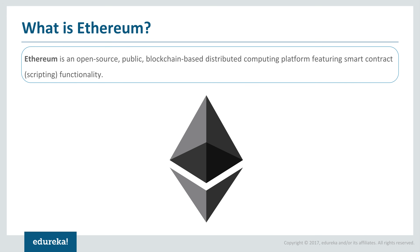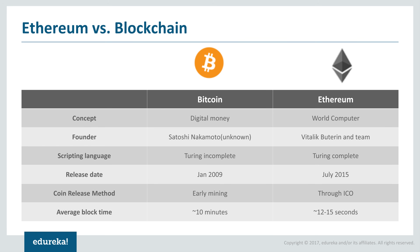When talking about Ethereum, one of the most fundamental and important questions that should come to mind is how it is different from Bitcoin blockchain. The first and most important difference between Bitcoin and Ethereum is the concept — the core idea — which brought these implementations out into the world.